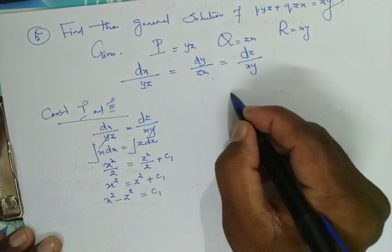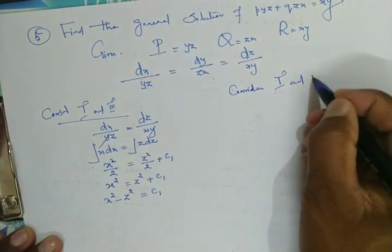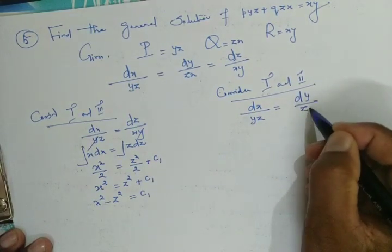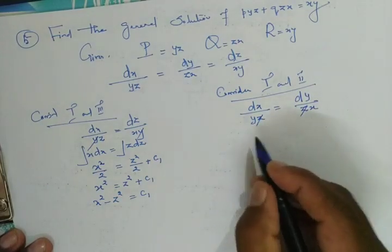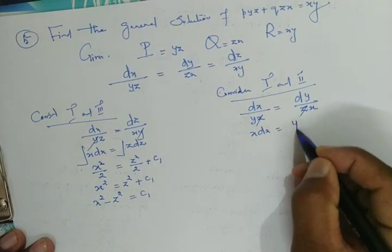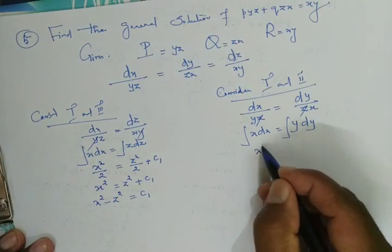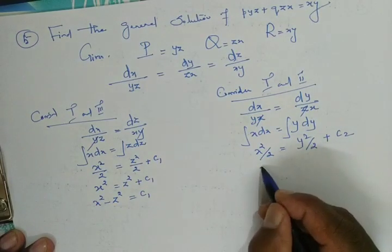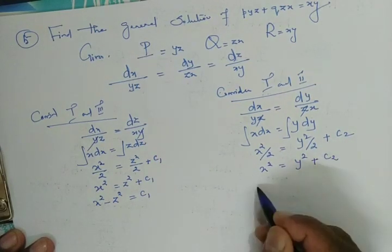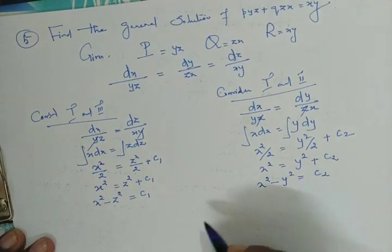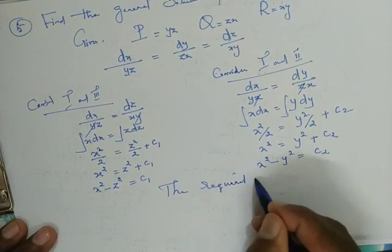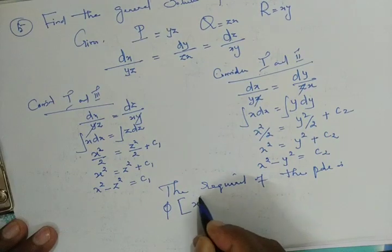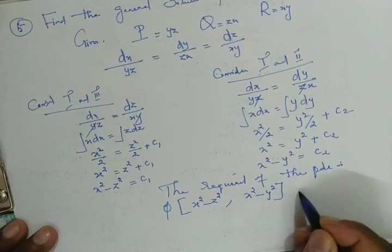Considering the first and second fractions: dx/yz = dy/zx. Here z is common in both denominators and cancels. Cross-multiplying gives x dx = y dy. Integrating both sides: x²/2 = y²/2 + c₂. Taking 2 as common, x² − y² = c₂. The required equation of the PDE is φ(x² − z², x² − y²) = 0.